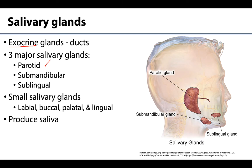There are also smaller salivary glands associated within the oral cavity. These include the labial, the buccal, the palatal, and the lingual. These are generally quite small and we really won't discuss these in much more detail.